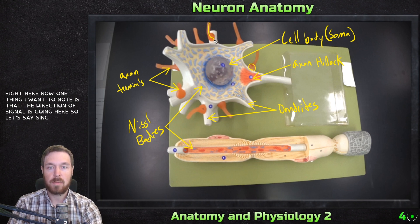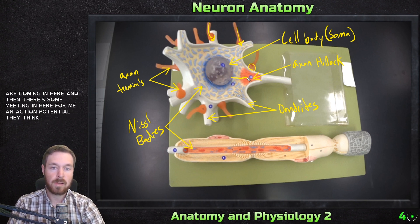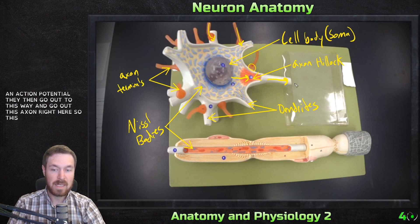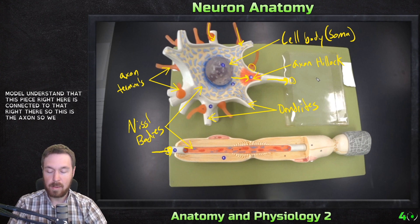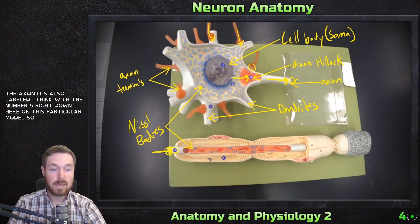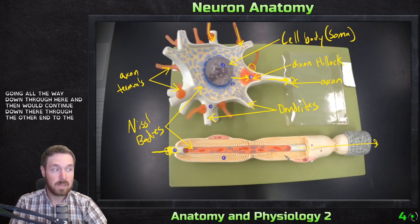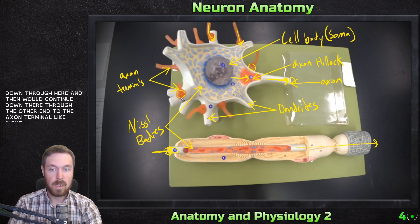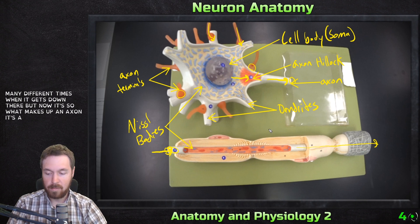Now, one thing I want to note is the direction the signal is going. Signals are coming in here, summating and forming an action potential, then going out this way down this axon right here. This piece right here is connected to that right there — so this is the axon. The signal travels all the way down and continues to the axon terminal, where it branches off many times. So what makes up an axon itself? A few important things here.